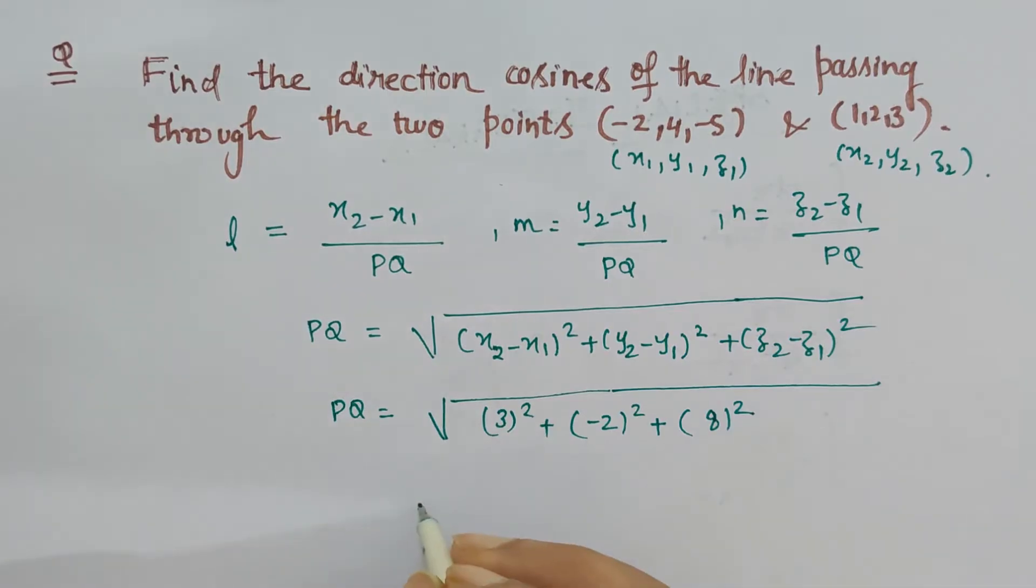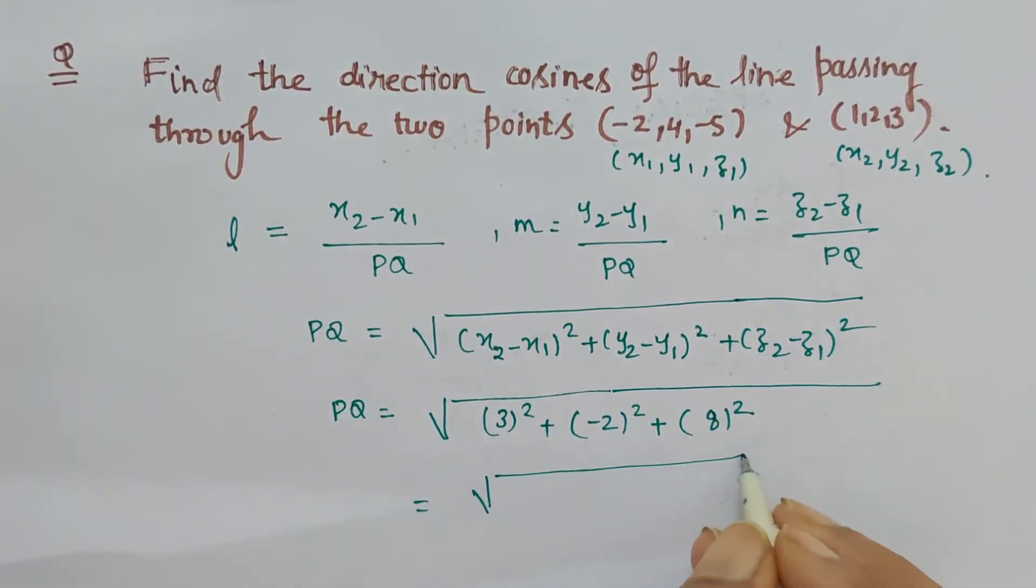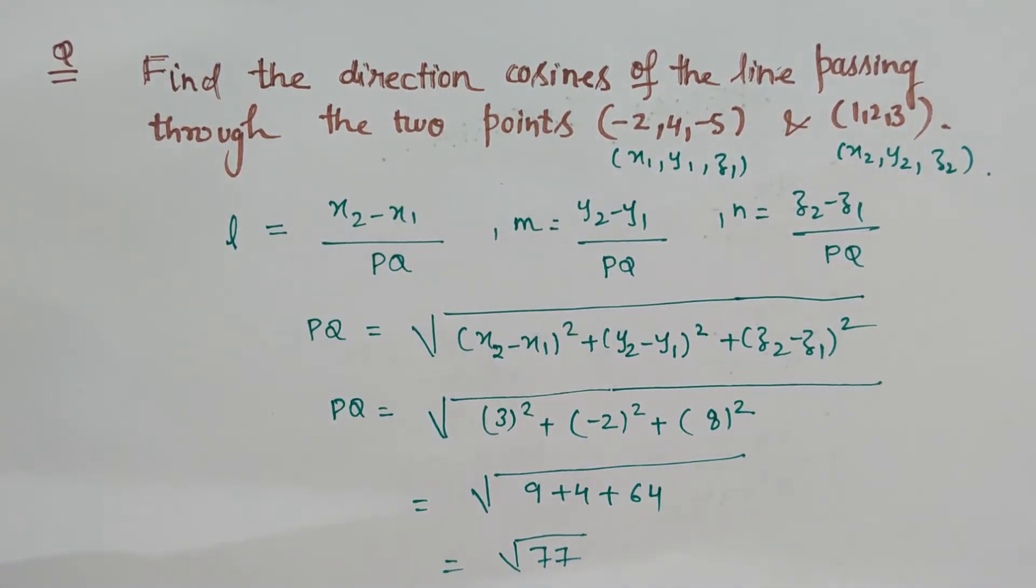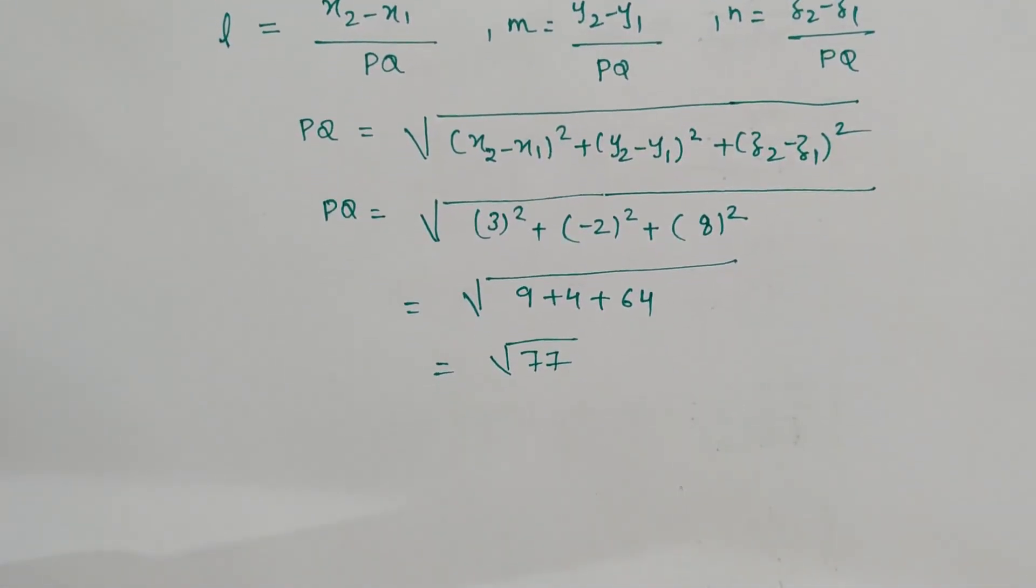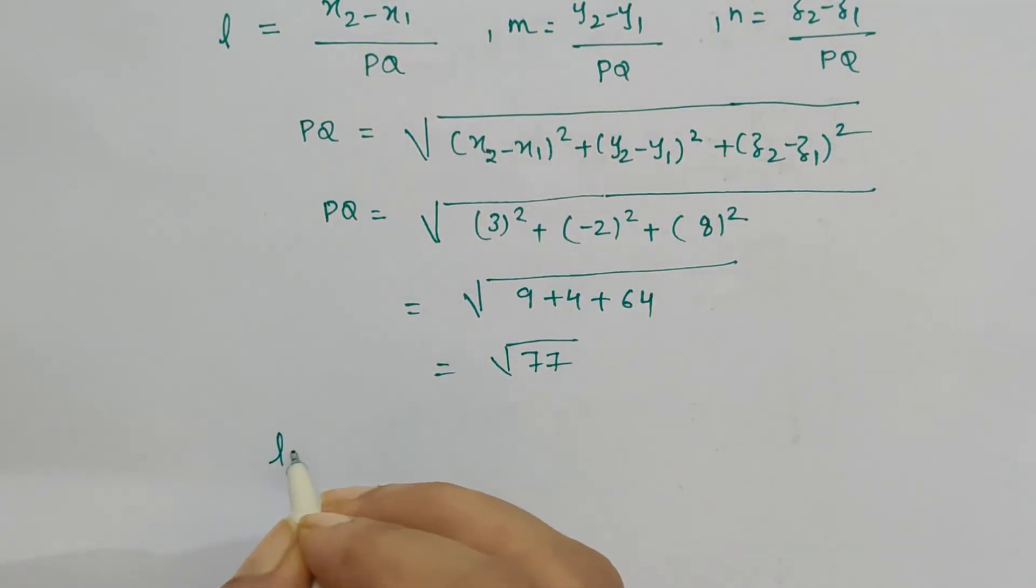Now let's simplify it further. This is 9 plus 4 plus 64, so this will be 77. So under root 77.